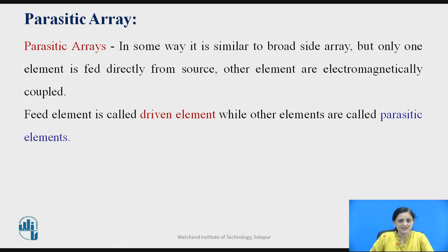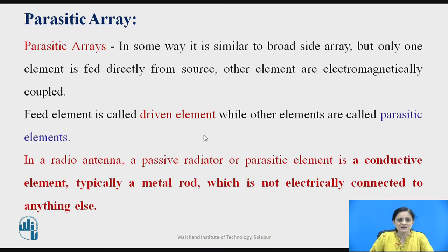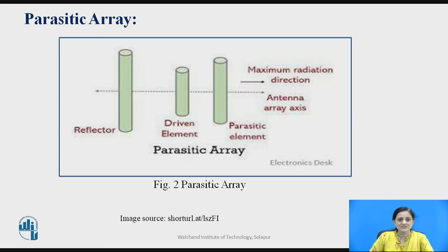What is the parasitic array? The parasitic array is similar in some way to the broadside array antenna, but only one element is fed directly from the source and the other elements are electromagnetically coupled — not physically connected, but coupled electromagnetically. The feed element is called the driven element, while the other elements are called parasitic elements. A parasitic element is a radiator or a reflector depending on the function of each element — it is a conductive element, typically a metal rod, not electrically connected to anything else.